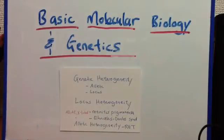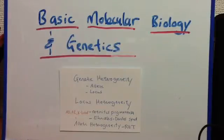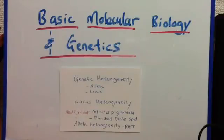Let's talk more about locus heterogeneity. A pedigree analysis may be sufficient to demonstrate locus heterogeneity, where different mutations happen at different loci on the chromosome. One example is retinitis pigmentosa.